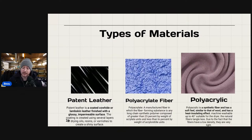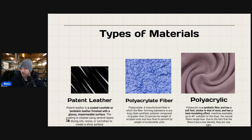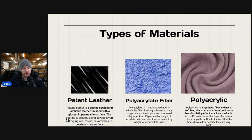Polyacrylic is a synthetic fiber with a soft feel similar to wool, with a heat-insulating effect. It's machine washable up to 40 degrees and suitable for the dryer. The natural fibers tangle less because the fibers have a low density and are very light. These are going to be in more lower-end types of brands.